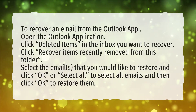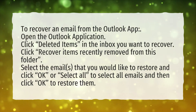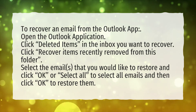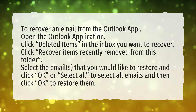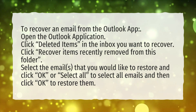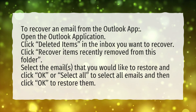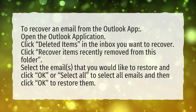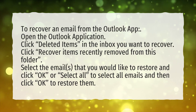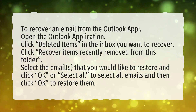To recover an email from the Outlook app, open the Outlook application. Click Deleted Items in the inbox you want to recover. Click Recover Items Recently Removed from this folder. Select the emails that you would like to restore and click OK, or Select All to select all emails and then click OK to restore them.